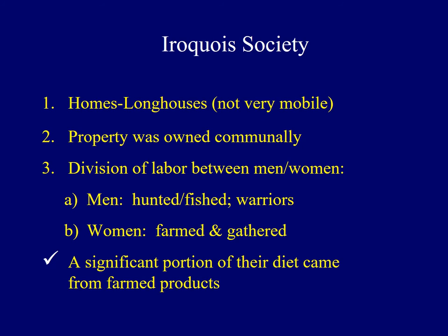Several other traits were common among the Iroquois. Property was owned communally. Europeans commented that there was no need for poorhouses among the Iroquois because if a family didn't have enough, others shared with them. There was also a division of labor between men and women. Men hunted, fished, and were warriors. Women farmed and gathered food products. Farming was a key component of their food supply, as a great deal of their food came from agricultural goods. Because women were the farmers and they relied so heavily on farmed products, this may explain why Iroquois women also held a great deal of political power.